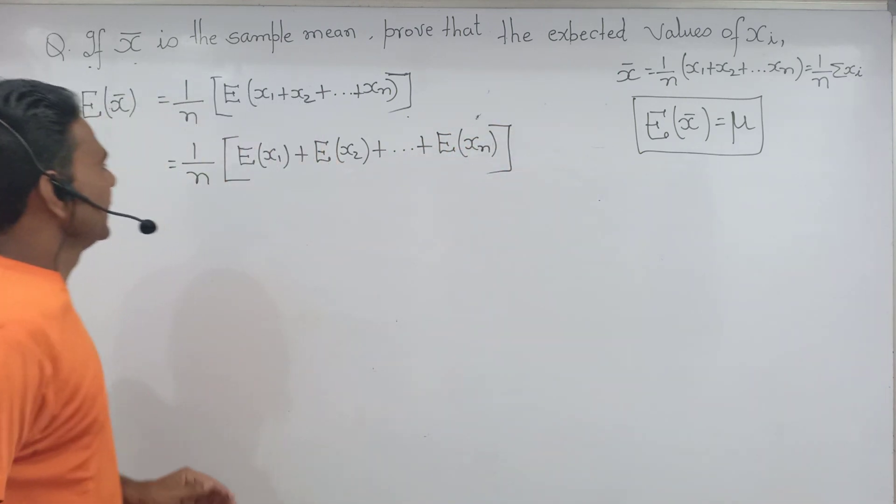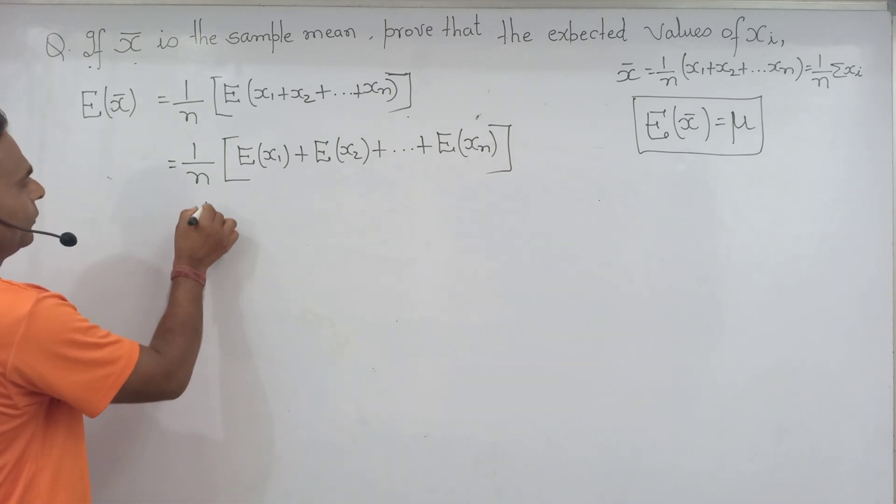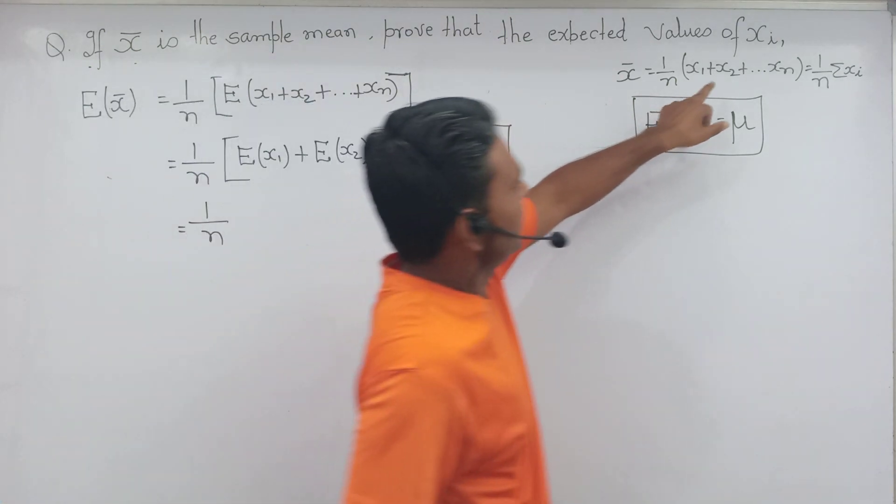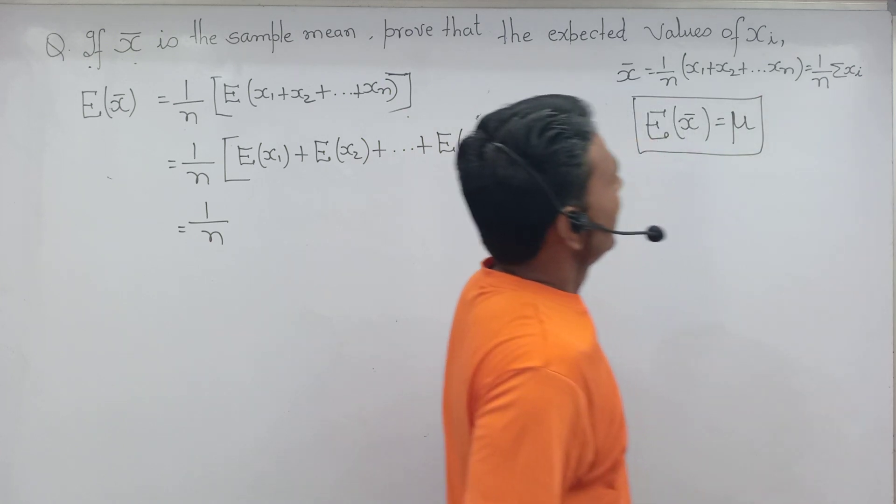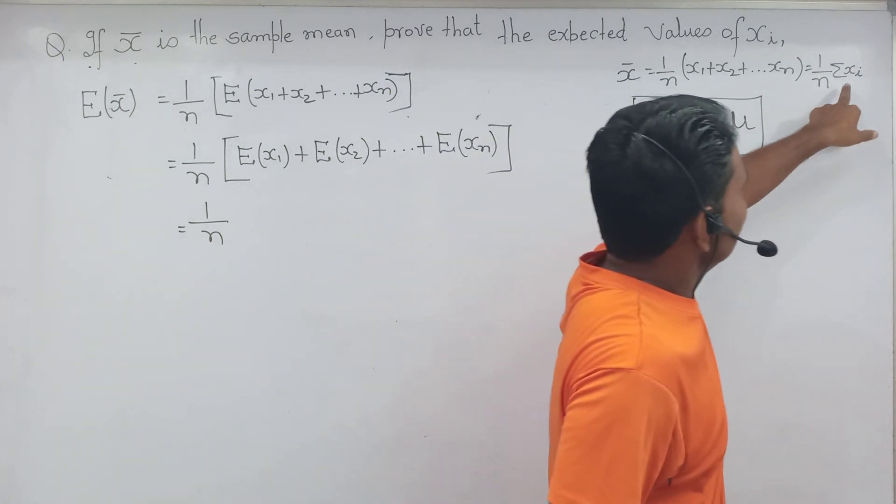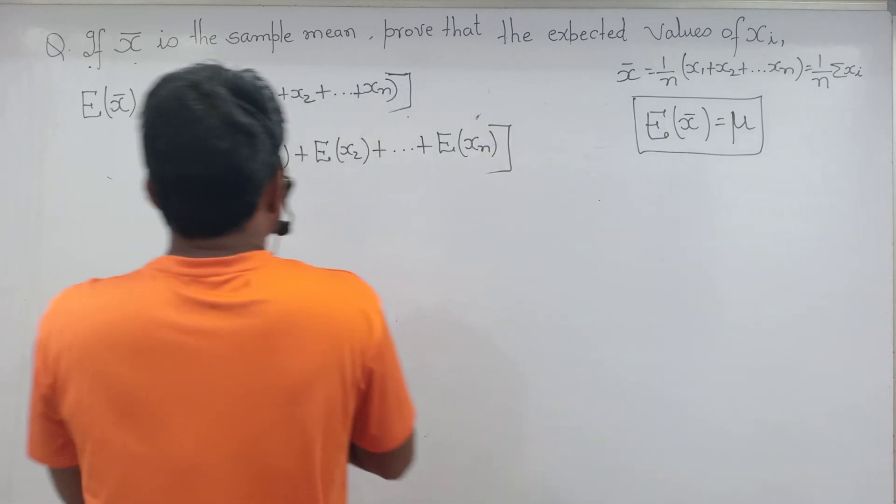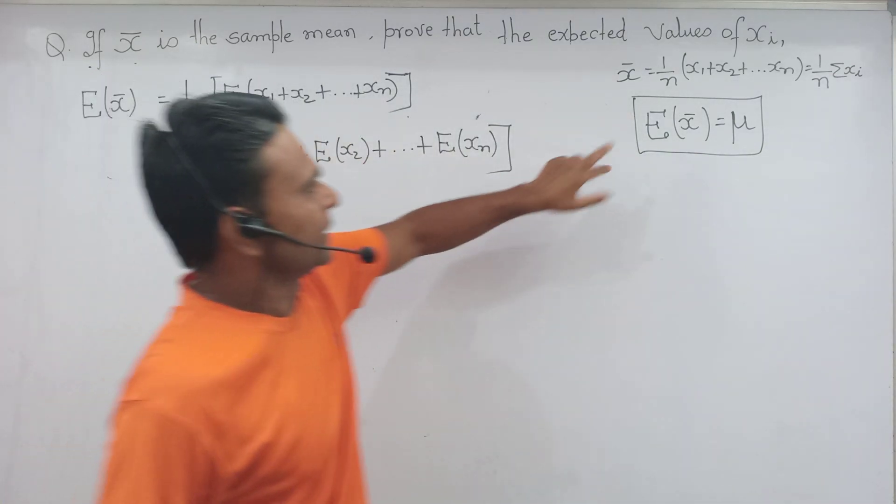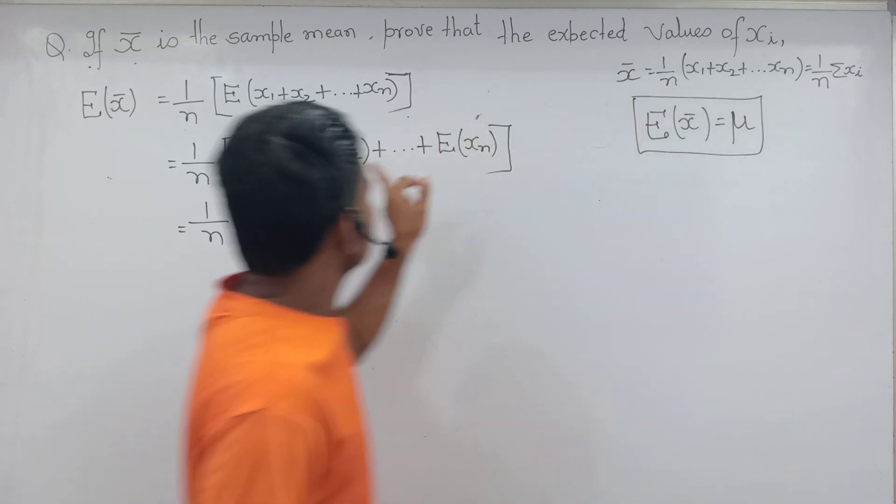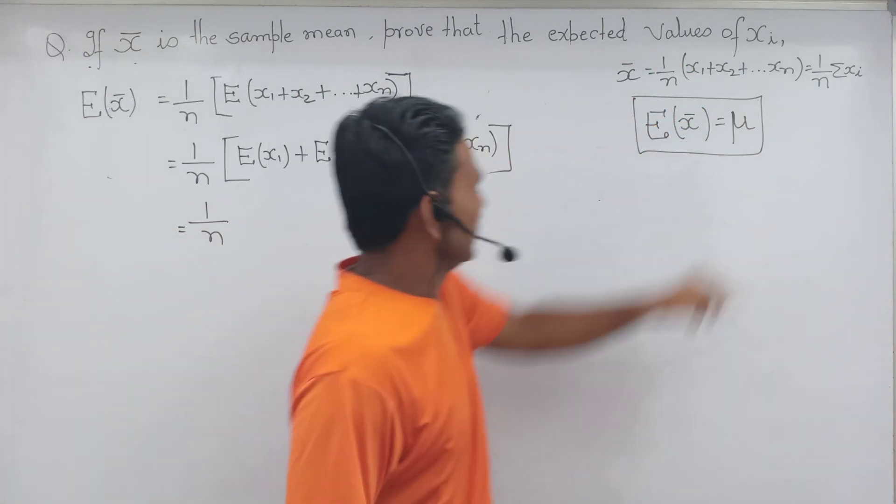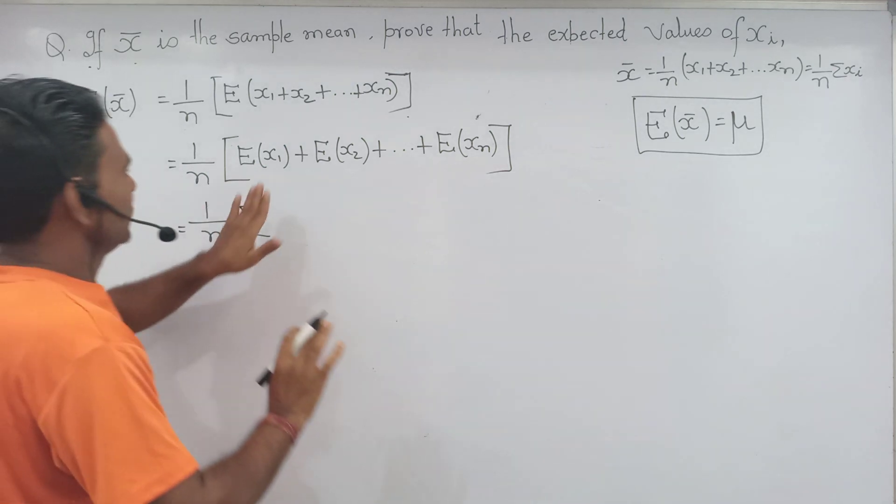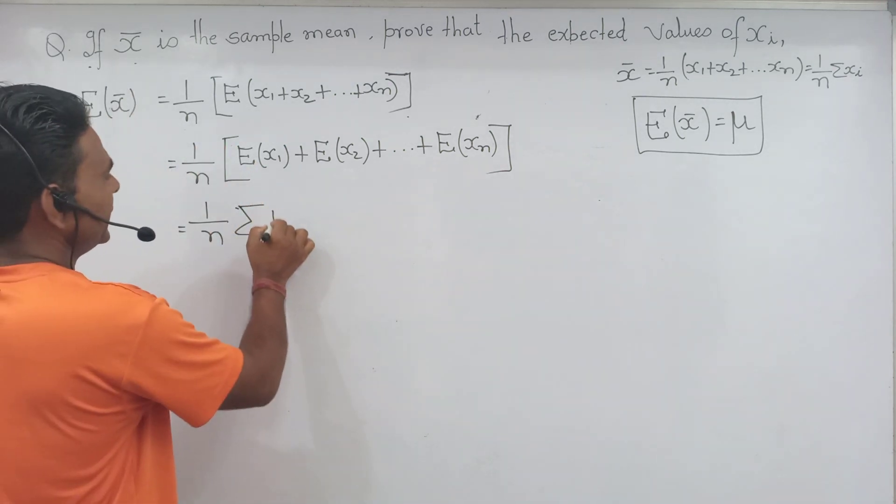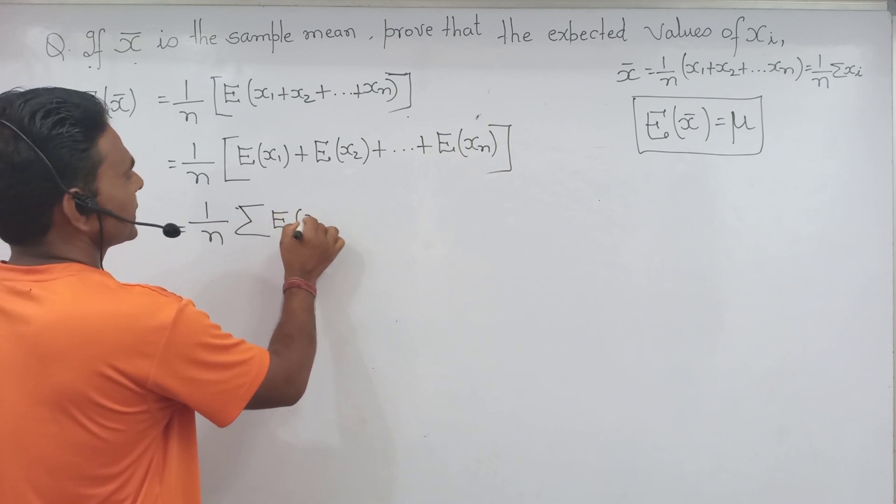1 by n, expectation, expected value of X_1 plus expected value of X_2 plus dot dot dot plus expected value of X_n. Bracket ko band karte hain. Ab yahaan thoda sa dhyan dene ki zarurat hai. 1 by n to by default hoga hi.